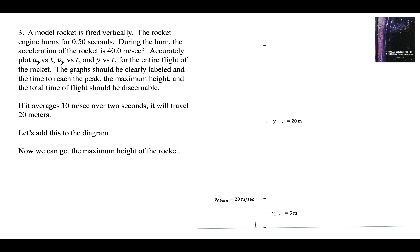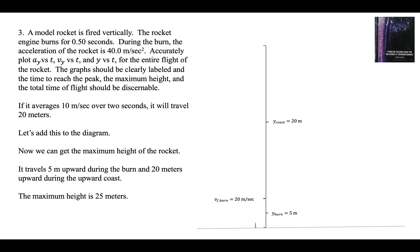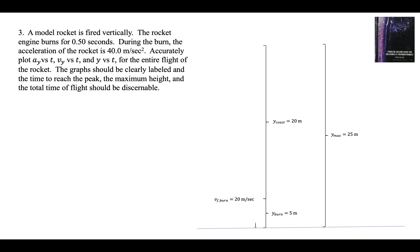Now we can get the maximum height of the rocket by adding the two distances: 5 meters upward during the burn and 20 meters upward during the coast gives a maximum height of 25 meters. We can put that on the diagram as well. So we have the complete upward flight mapped out.